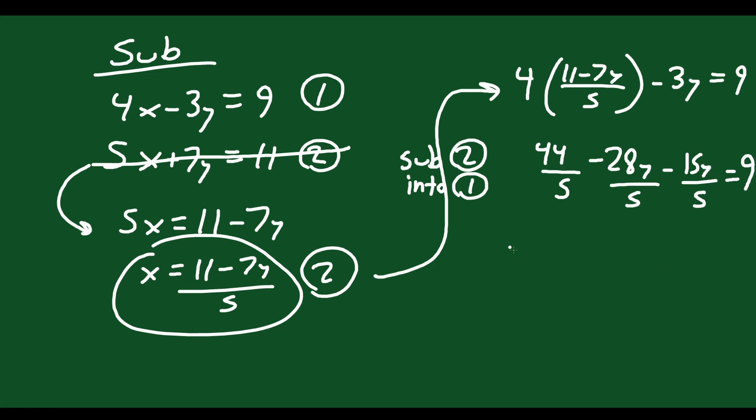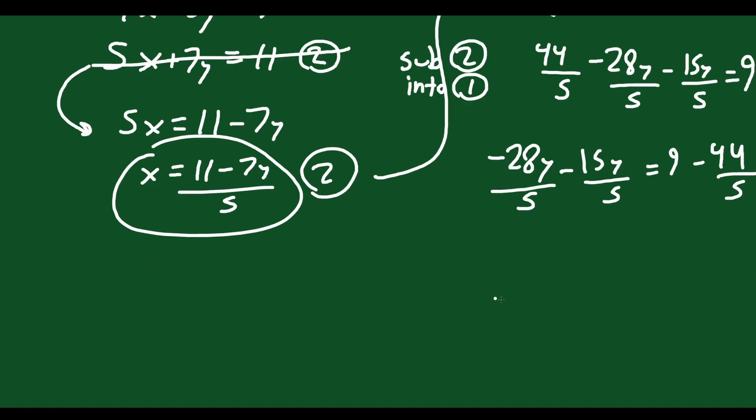Move that 44 over 5 to the right. So I'm left with minus 28y over 5 minus 15y over 5 equals 9 minus 44 over 5. Just like that. The 9 can become 45 over 5, right? So that's just going to be 45 over 5. 45 over 5 minus 44 over 5. Well, that's just going to become a fifth, right? 45 minus 44 is 1. And on the left-hand side, negative 28 and negative 15 together make negative 43y over 5.